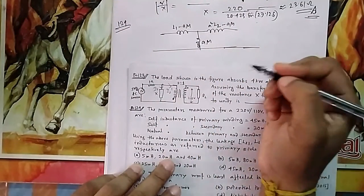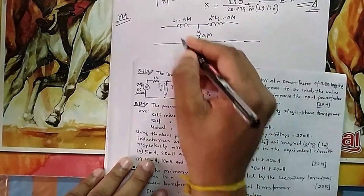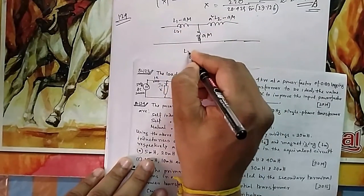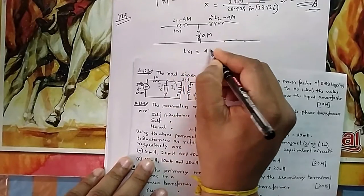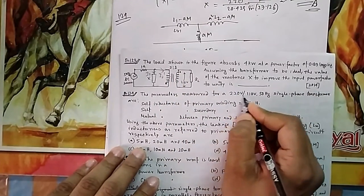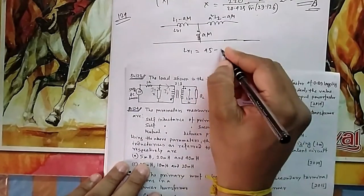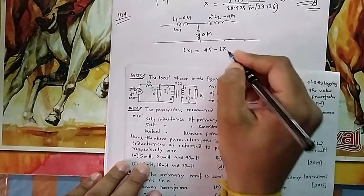First you convert into primary, then deduct this mutual inductance part. So what this will be your Lx1? So your Lx1 is equal to L1 - they have given 45 - minus, because it is single phase, so the ratio is simple, this by this, that is 2. So a is here 2, so times mutual inductance is given 20, so it will be 5.